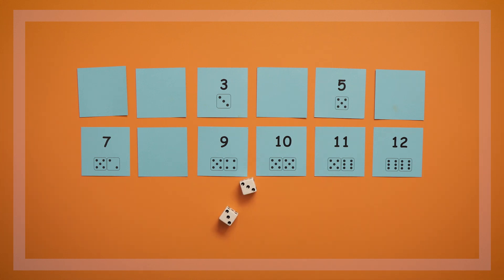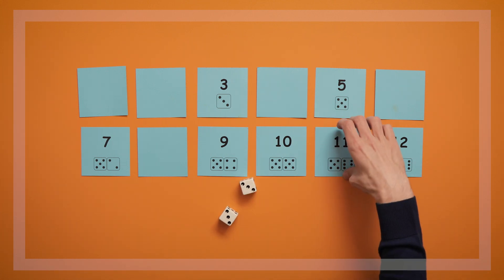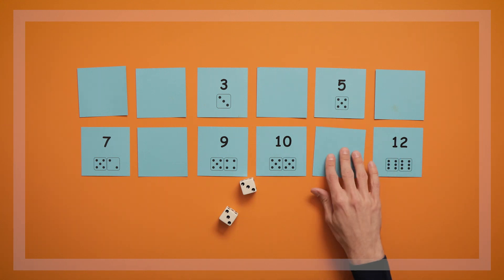In the last version of this game, called Roll 2 1 to 12, two regular dice are used with the 1 through 12 cards.